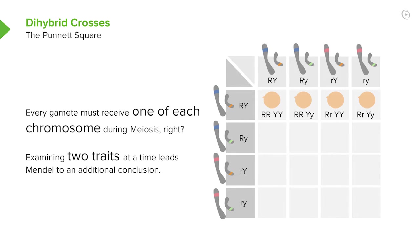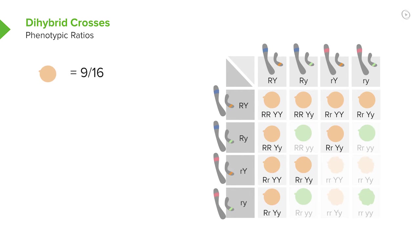And eventually we work our way through there and discover that we have nine out of 16 being the dominant form. And we have three out of 16 being one of the heterozygous forms, and then we have three out of 16 being the other heterozygous form. And finally, we have one being purely recessive at both traits.